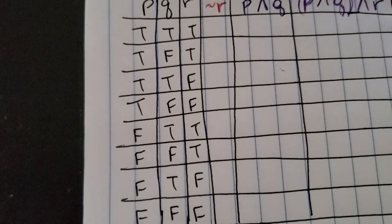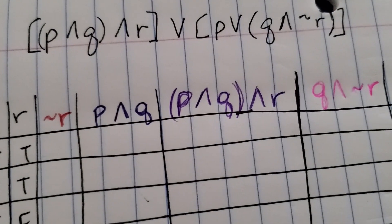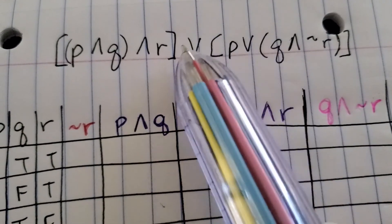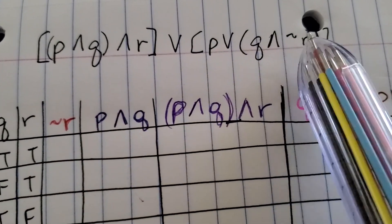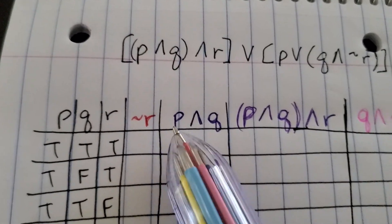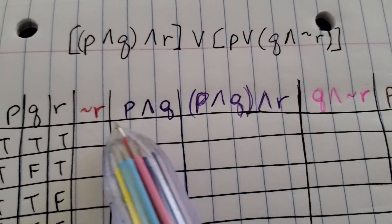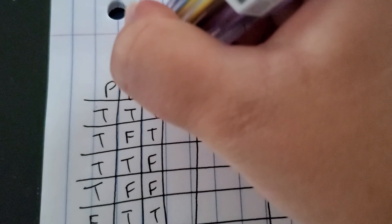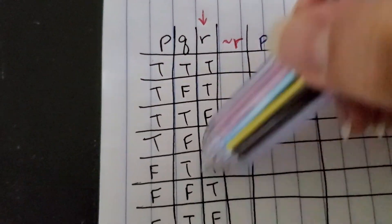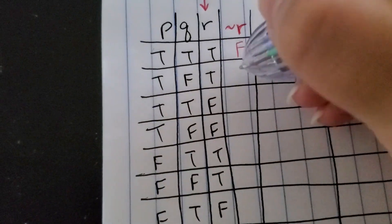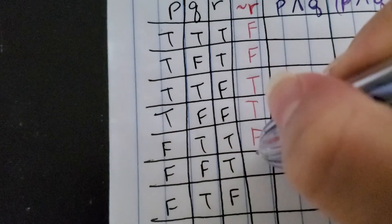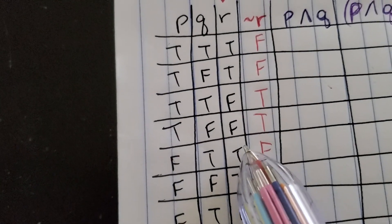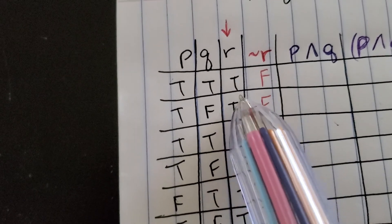I looked at my statement and asked: what am I going to need that I don't already have? I see P, Q, and R — I already have those — but I see a not R, so I started with not R first. Not R means I'm looking at the R column and swapping everything to its opposite: false, false, true, true, false, false, true, true.